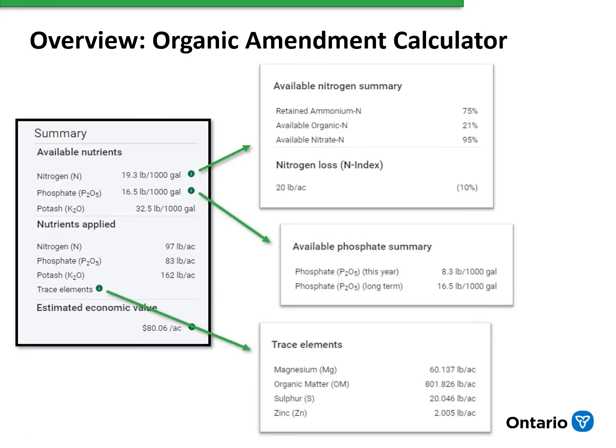Throughout AgriSuite, there are a series of little green circles with an eye, or information icons. These icons provide some additional information on the availability of different nutrients based on our management decisions — for example, nitrogen availability based on timing and incorporation details, as well as potential nitrogen loss from leaching below the root zone. The information icon for the available phosphate gives an idea of how much is immediately available and how much may contribute to the longer supply of phosphorus in the soil. The trace elements information icon will give an estimate of how much of the different trace elements in the analysis have been applied to the soil in that application.